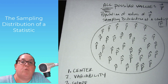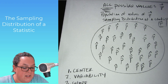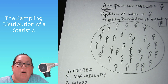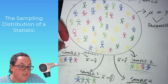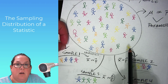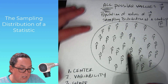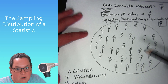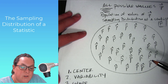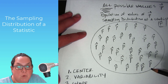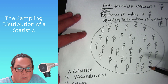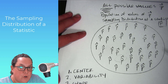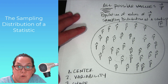This might seem weird and pointless — why would you want to take all conceivable random samples to find every possible p-hat value? When you do a statistical inference, you just take one sample to estimate the population. But we need to understand the characteristics of all these p-hat values so we know how to properly use them to estimate p, which is our long-term goal. A statistical inference takes a sample to make an inference on a population, and to do it effectively, you need to understand how these p-hat values act in comparison to the parameter you're trying to estimate.